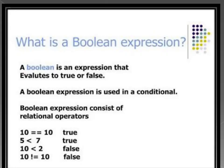Now we will discuss what is a boolean expression. A boolean expression is an expression that evaluates to true or false. This expression is used in a conditional form and consists of relational operators such as equal to, less than, greater than, and not equal to. For example, '10 equal to 10' is a true statement and evaluates to true — that's why it is a boolean expression. Similarly, '5 is less than 7' is also true and evaluates to true. Relational operators are used in all such expressions, and those that evaluate to false are also examples of boolean expressions.